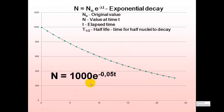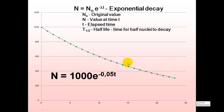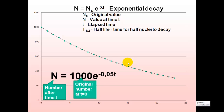Here we have a specific example of this equation. N is the number of nuclei that are left. N naught is the original number, which is 1000 in this case — it starts at 1000. Lambda is 0.05, the decay constant, which is the probability of any nucleus decaying in one second. It's negative, meaning it's an exponential decay and not growth, so the number is reduced. This gives the number remaining after time T, with the original number at T equals zero.